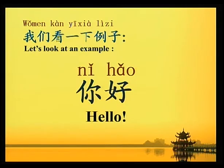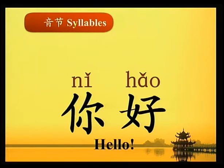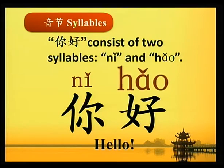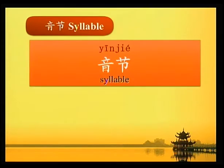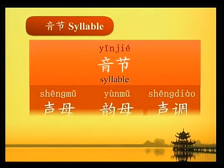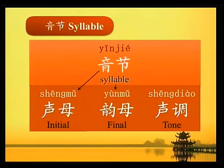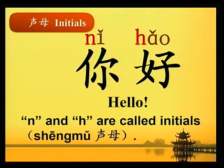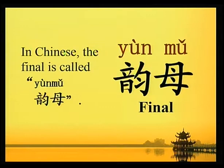你好, hello. A syllable consists of an initial, a final, and a tone. An initial is generally the first consonant in a syllable. In Chinese, the initial is called 声母。